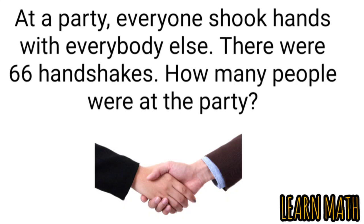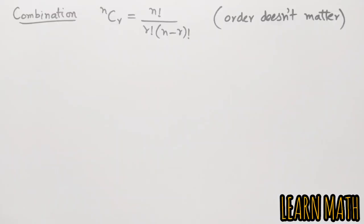Assalamu alaikum, hi everyone, my name is Zain and you are watching my YouTube channel Learn Math. In our previous video I solved this problem by the sum of natural numbers formula. You can find the link in the description. In this video we will use combination to solve the problem. If the order of the objects does not matter then we use combination. If the order is important then we use permutation. We will talk about this in detail in our upcoming videos.